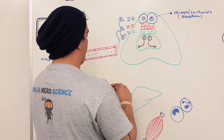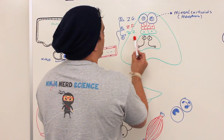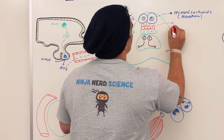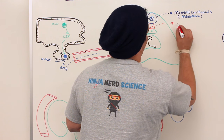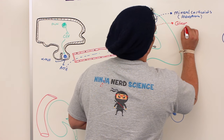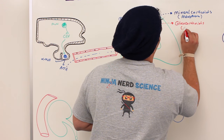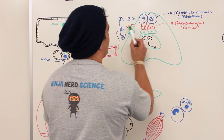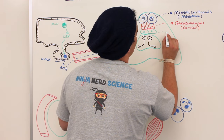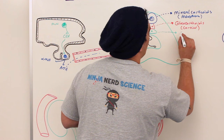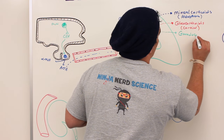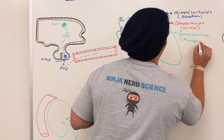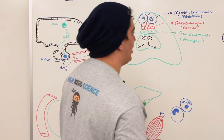Adrenocorticotropic hormone also acts on the zona fasciculata to control metabolic activities related to glucose. These are called glucocorticoids, and the specific one is cortisol. It can also stimulate the zona reticularis to produce gonadocorticoids — specifically androgens like androstenedione and DHEA (dehydroepiandrosterone) — which affect the ovaries and testes.